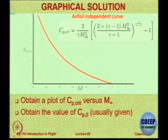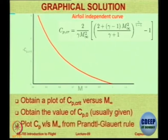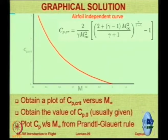The next step is to obtain the value of Cp naught — that means Cp at lower Mach numbers. Usually this is given from aerofoil data. If you do not know it, you will have to make a guess. Then you plot Cp versus M infinity from the Prandtl-Glauert rule. The Cp naught is the value at which you cut the y-axis; it will not be the same for all aerofoils, so it has to be obtained from experimental data or an online calculator.